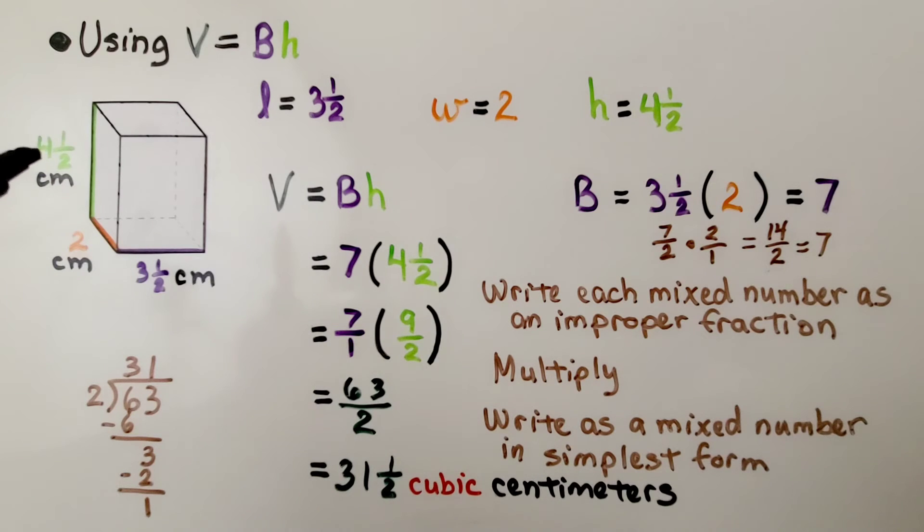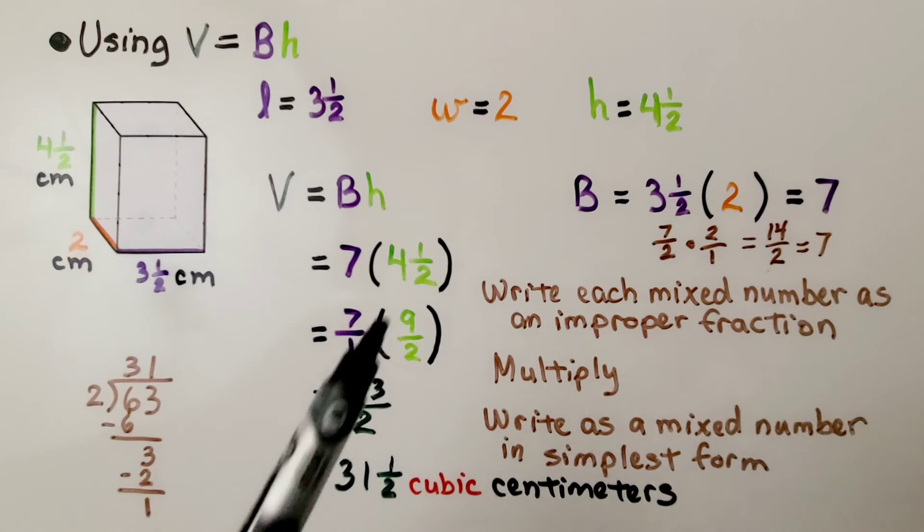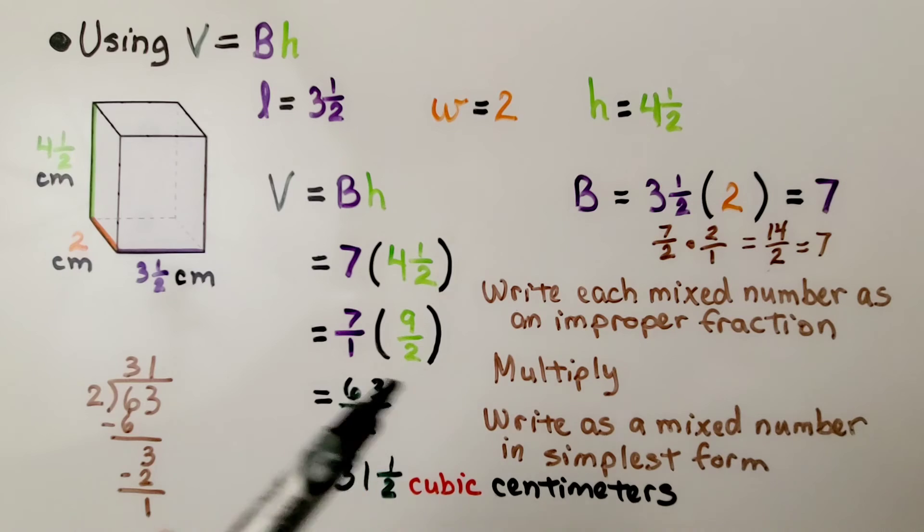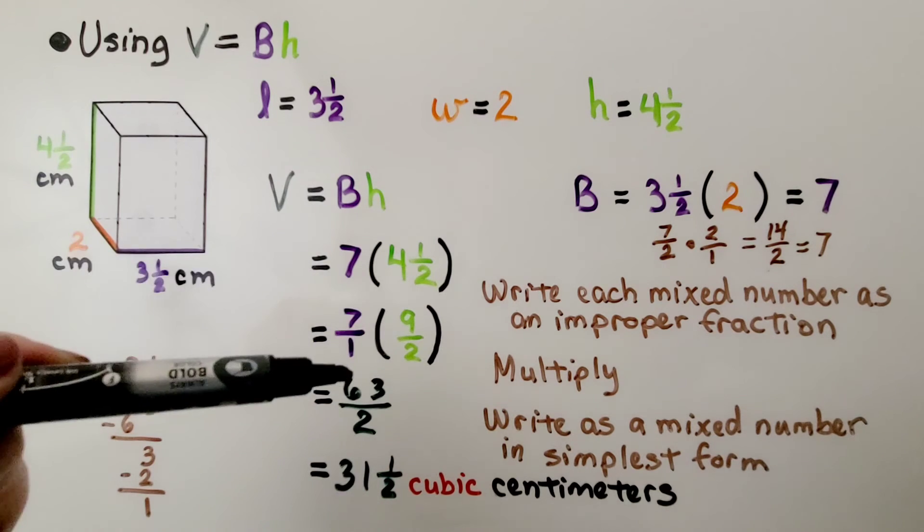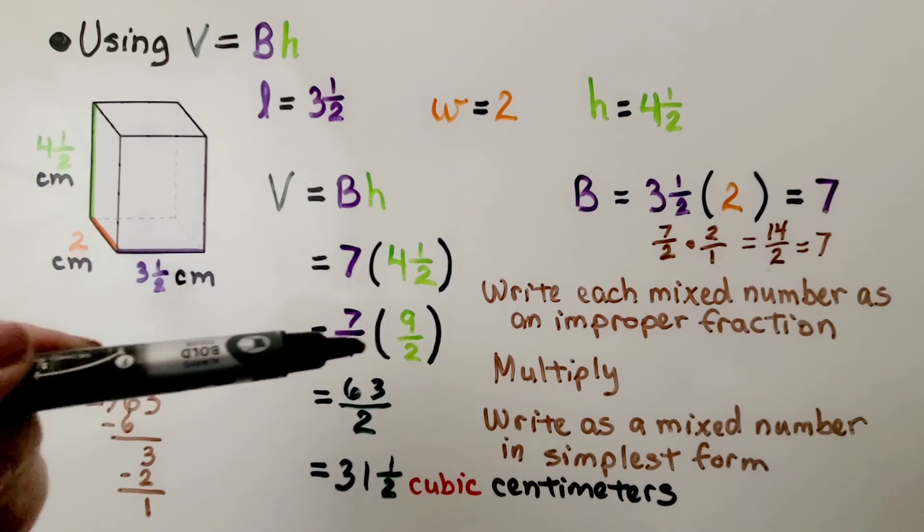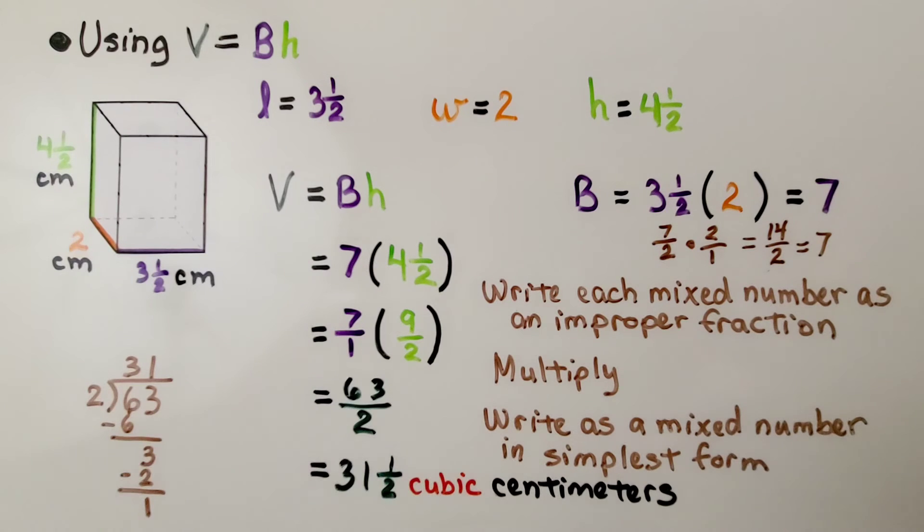Now we have seven for this capital B, and we multiply it by four and a half, the height. Four and a half is nine halves. We have seven times nine, so our numerator is sixty-three, and one times two is two. We have a two for a denominator. We have sixty-three halves.